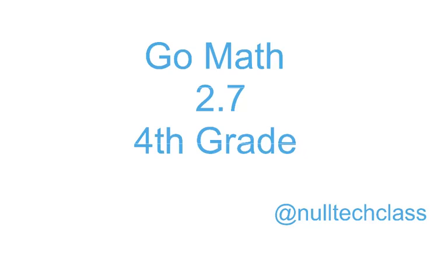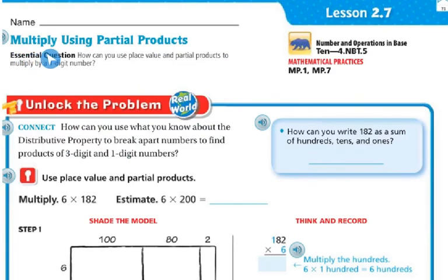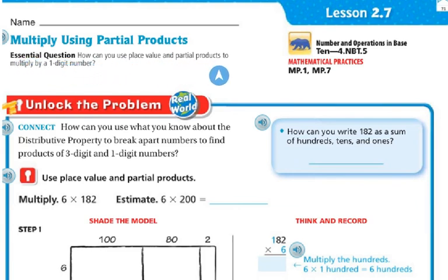Good morning. Today's lesson is 2.7. Today we're going to multiply using partial products. Our essential question: how can you use place value and partial products to multiply by a one-digit number? Let's unlock the problem.